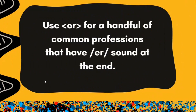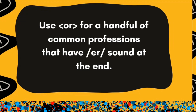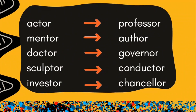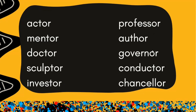Tip number three says use OR for a handful of common professions that have the OR sound at the end. In tip two I gave you a pattern, but now you need to memorize some common professions that have the OR ending: actor, mentor, doctor, sculptor, investor, professor, author, governor, conductor, and chancellor. You may find some other words with the OR sound at the end, but you can simply make a list of the most common words to help kids learn the spellings at the beginner level.